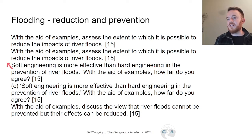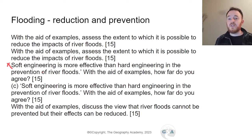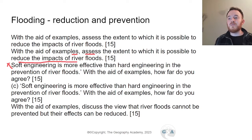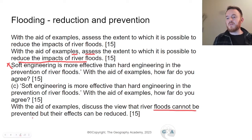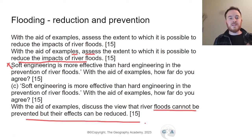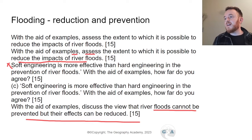For example: 'Soft engineering is more effective than hard engineering in the prevention of floods' — or the reverse. These are essentially the same question. You could also see: 'Assess the extent to which it is possible to reduce the impacts of river floods.' Here you'd cover hard engineering, soft engineering, and the view that floods can't be prevented but their effects can be reduced, including natural defences and evacuations.